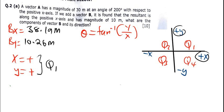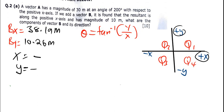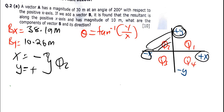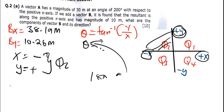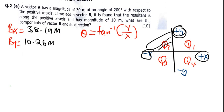If x is negative and y is positive, the vector is in the second quadrant. To find the actual angle you say 180 minus the theta from the formula, plugging in positive values only. If both x and y are negative, it's in the third quadrant, and the actual angle is theta plus 180.